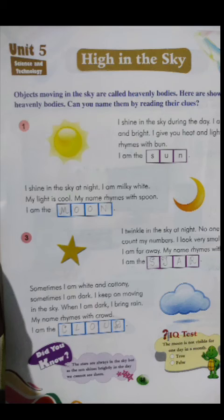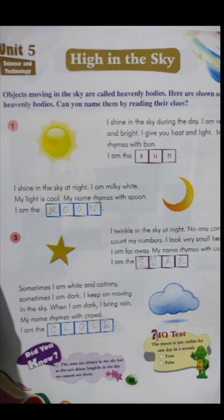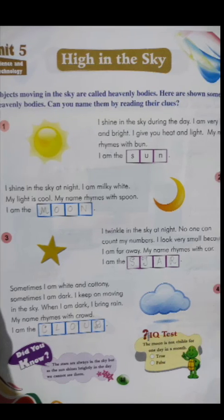Number four: sometimes I am white and cottony, sometimes I am dark, I keep on moving in the sky, when I am dark I bring rain - that is clouds. Clouds can be black, white, or gray. The gray or dark clouds are the ones that bring rain.